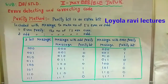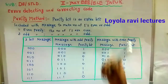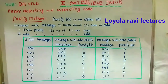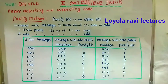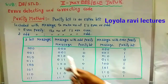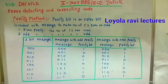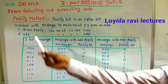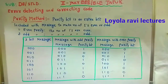Hi students, today we will discuss about error detecting and correcting codes. This topic has two methods: one is the parity method and another is the Hamming code method. Here we are going to discuss about the parity method.